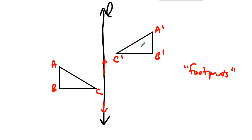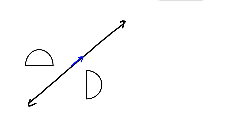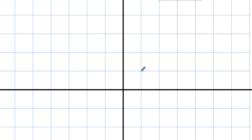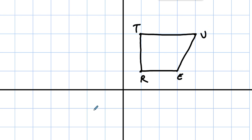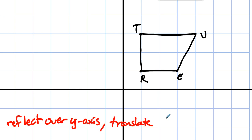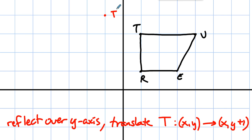That is roughly all you need to know about glide reflections. We can do them in the coordinate plane. You get some figure in the coordinate plane — this is R-E-U-T. Let's pretend that we want to reflect over the y-axis, and then translate where T takes (x, y) to (x, y+1). So we reflect over the y-axis and then up 1, for each point of the figure.